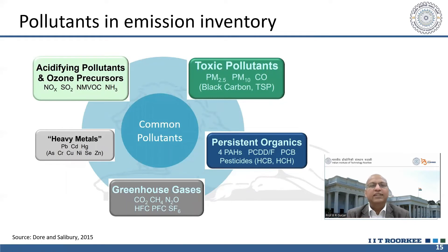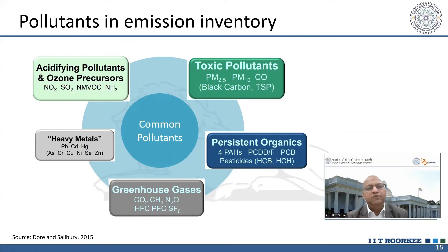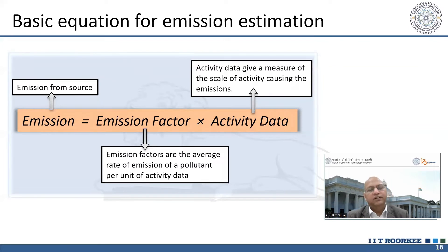Different pollutants can be covered in emission inventory — as many as needed depending upon the situation. For the transportation sector or highway vehicle movement, it is better to focus on CO and NOx emissions. You can estimate emissions for any kind of pollutants: toxic pollutants, criteria pollutants, acidifying pollutants like NOx and SO2, heavy metals, POPs (persistent organic pollutants), and greenhouse gases. Depending upon the need, you can develop emission inventory for any particular pollutant.